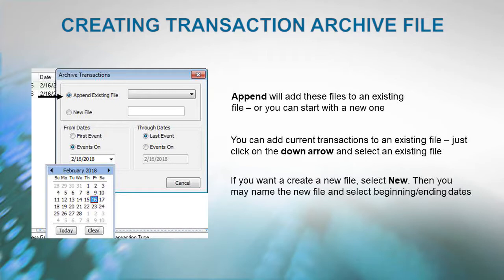If you want to create a new file, select New. Now you may name the new file and select the beginning and ending dates that you wish to archive.